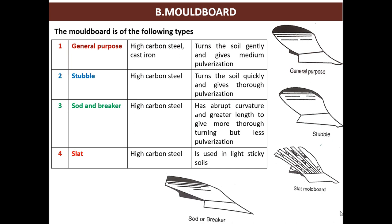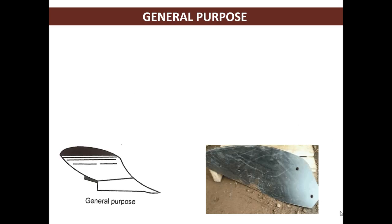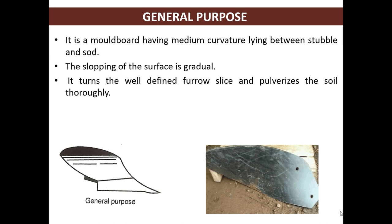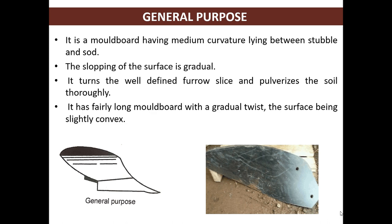Slat type is also made up of high carbon steel and is used in light sticky soils. General purpose moldboard has medium curvature lying between stubble and sod or breaker type. The sloping of the surface is gradual, as you can see in the figure. It turns a well-defined furrow slice and pulverizes the soil thoroughly. It has a fairly long moldboard with a gradual twist, the surface being slightly convex.